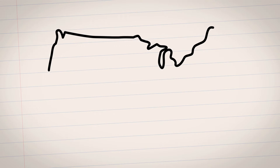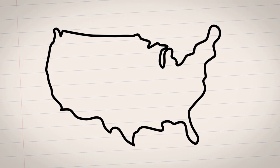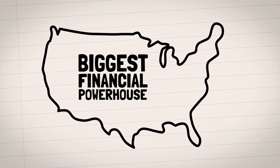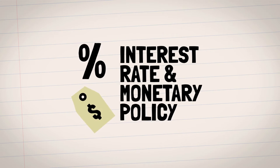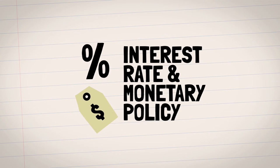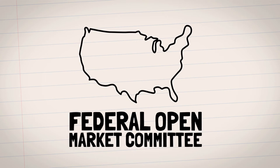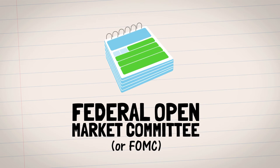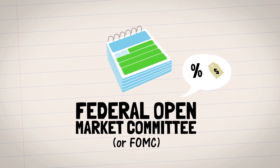Now, keep in mind, most of this data is based on the US economy, since it's the biggest financial powerhouse that moves global markets. So first, let's look at interest rate and monetary policy. For the US, the Federal Open Market Committee, or FOMC, makes scheduled announcements eight times a year regarding interest rate or monetary policy.